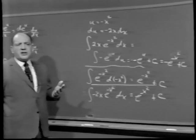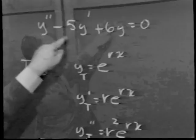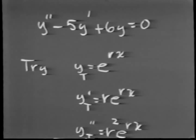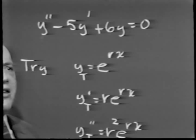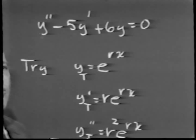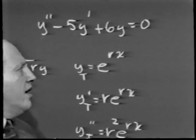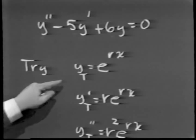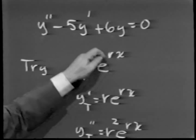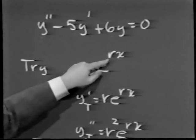Suppose y is a twice-differentiable function of x satisfying: the second derivative of y minus 5 times the first derivative of y plus 6 times y equals 0. This is called a second-order differential equation because the highest derivative that appears is the second. As a trial solution y sub t, let's try e to the rx, where r is a constant. The derivative of e to the rx with respect to x gives e to the rx back again with a factor of r, since the derivative of rx is just r.